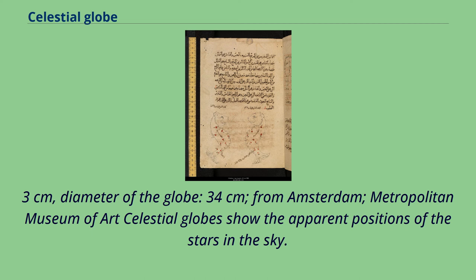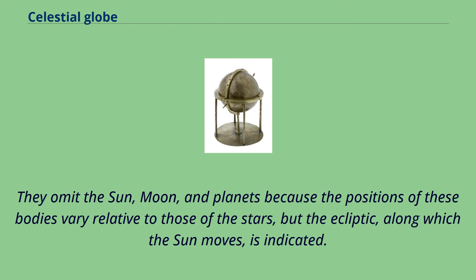Celestial globes show the apparent positions of the stars in the sky. They omit the sun, moon, and planets because the positions of these bodies vary relative to those of the stars, but the ecliptic, along which the sun moves, is indicated.